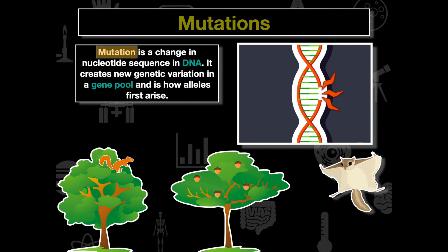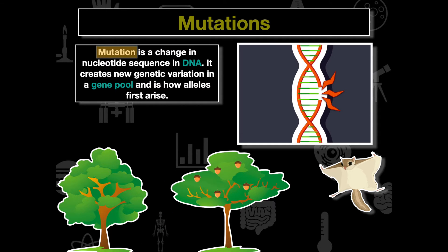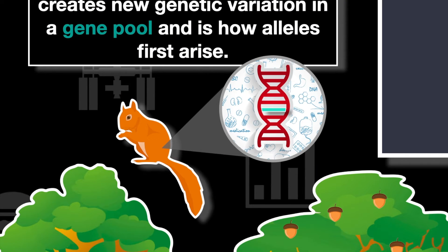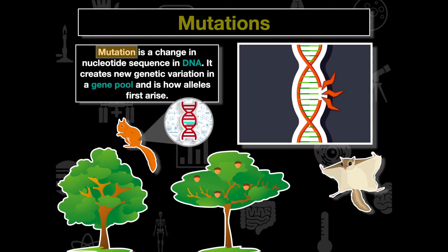Consider regular squirrels that climb trees. They've consumed all the acorns in one tree and need to jump to the next, but can't because they lack wings or the ability to jump that far. How do flying squirrels evolve? A change in the nucleotide sequence creates a protein cascade effect that produces a phenotype — the skin flaps we see on flying squirrels.